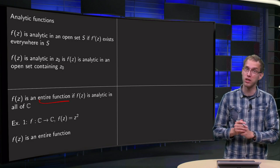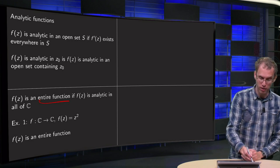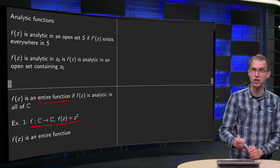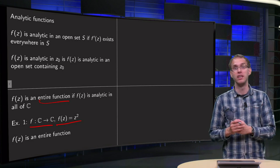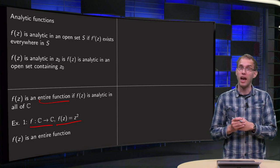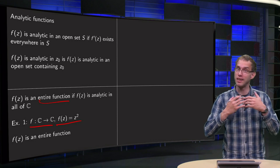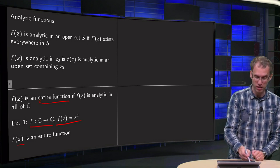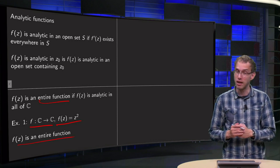So let's take a look at a few examples. Suppose we have f from ℂ to ℂ, f(z) = z². We know that we can differentiate f(z) everywhere, which means that f(z) is analytic everywhere. So f(z) is an example of an entire function.